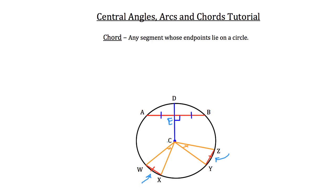Because as you just learned, the central angle is always going to be equal to the arc that it creates on the edge of the circle. So if these two central angles are equal to each other, then the arcs that they've created — in this case arc WX and arc YZ — are also going to be congruent to each other.